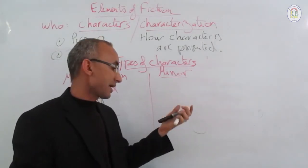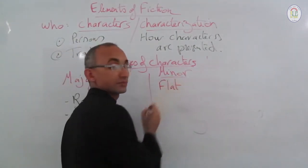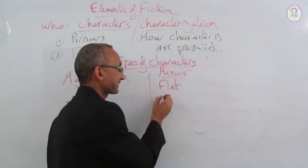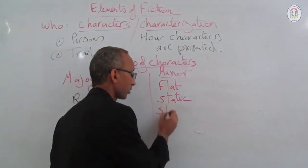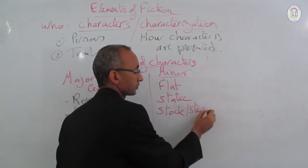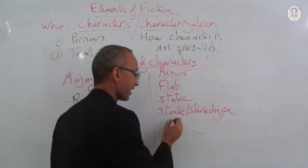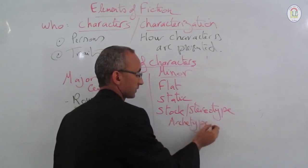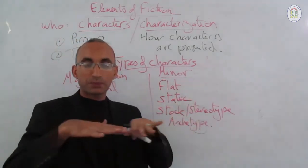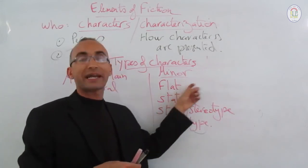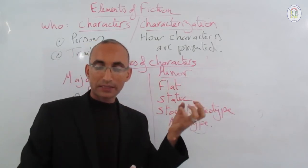On the other hand, the minor character is described by critics as flat, also static, sometimes stock, and sometimes archetype. Flat means superficial — a one-dimensional character who is always good or always bad. For example, the witch in Snow White, or the stepmother in fairy stories who is always evil and angry.